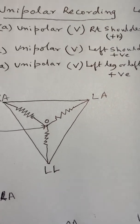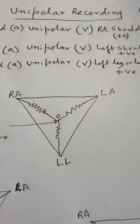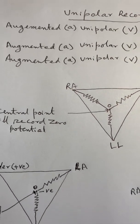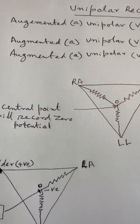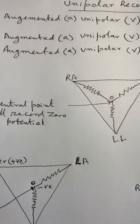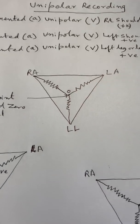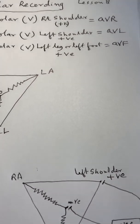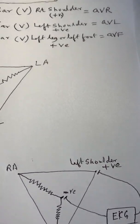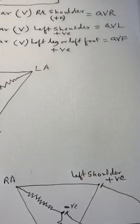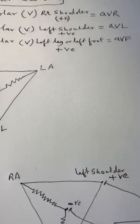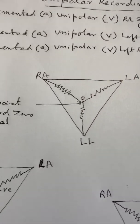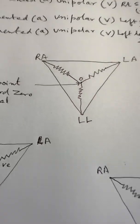This is our eighth lesson and today we are discussing the unipolar recording, that is augmented recording. We have got three augmented leads: AVR, AVL, and AVF. 'A' is taken from augmentation, 'V' denotes unipolar. AVR means right shoulder — recording unipolar from the right shoulder. When recording from the left shoulder it is AVL, and from the left foot it is AVF. These are the three augmented leads.